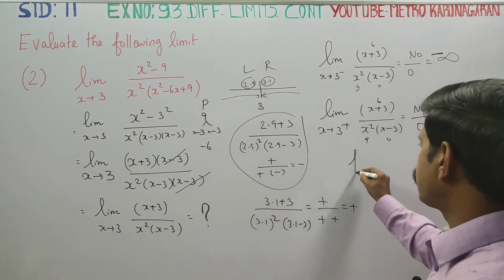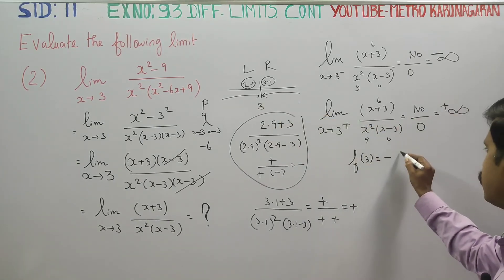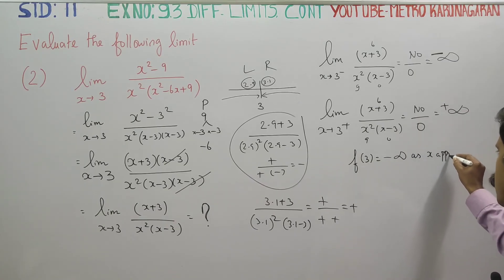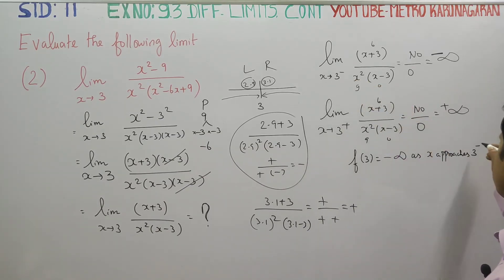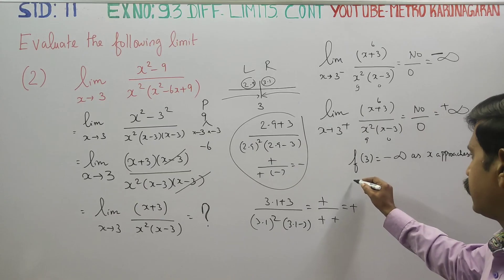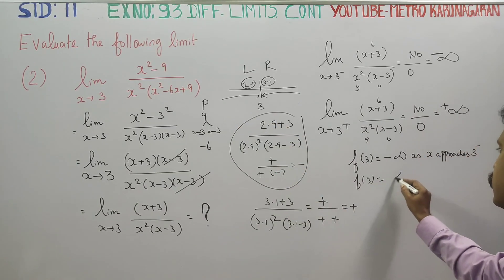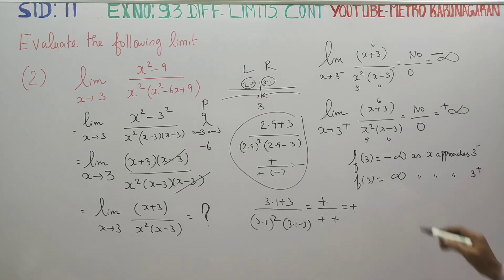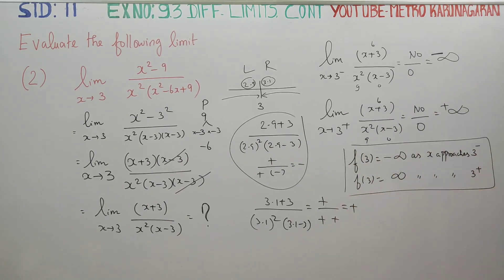As x approaches 3 from the left, f approaches minus infinity. As x approaches 3 from the right, f approaches plus infinity. Since the left-hand side limit and right-hand side limit are not equal, the limit does not exist — we get two different answers.